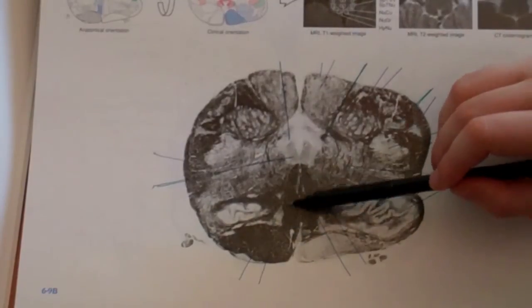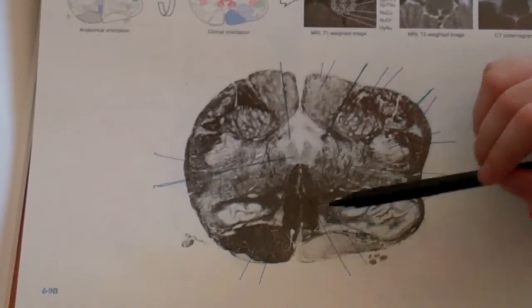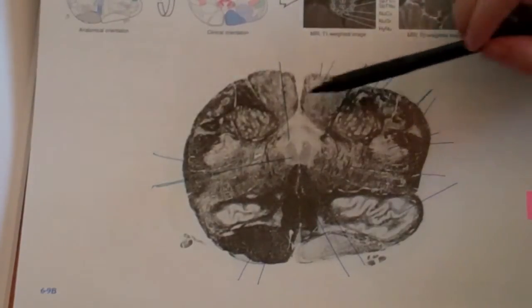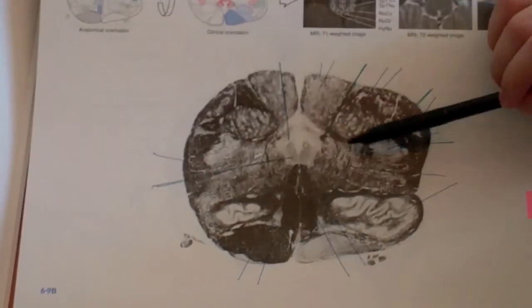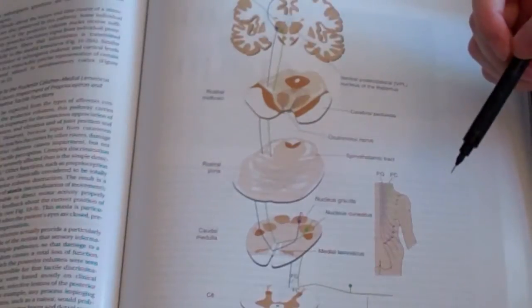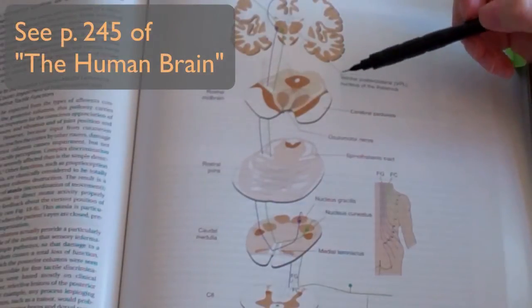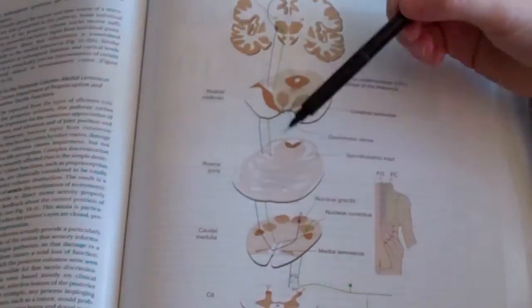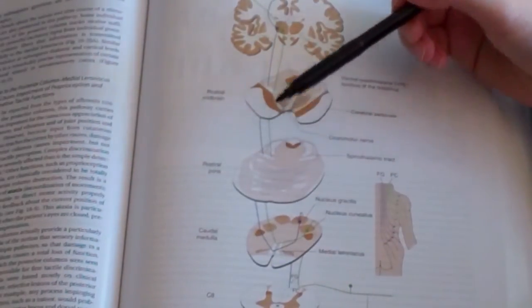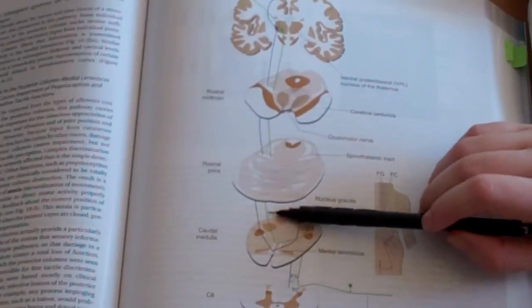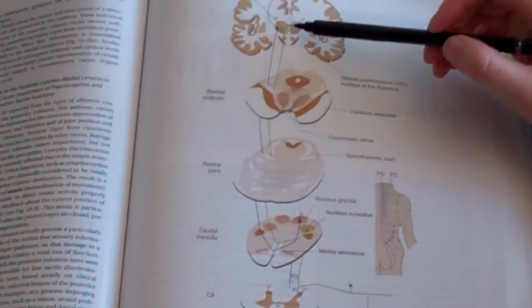Here you have the medial lemniscus on both sides, the nucleus gracilis on both sides, and the nucleus cuneatus on both sides. From here the fibers ascend all the way to the thalamus. In the pons, the medial lemniscus ends up oriented like this, and in the rostral midbrain it ends up like this. The fibers ascend through this medial lemniscus all the way up to the thalamus.